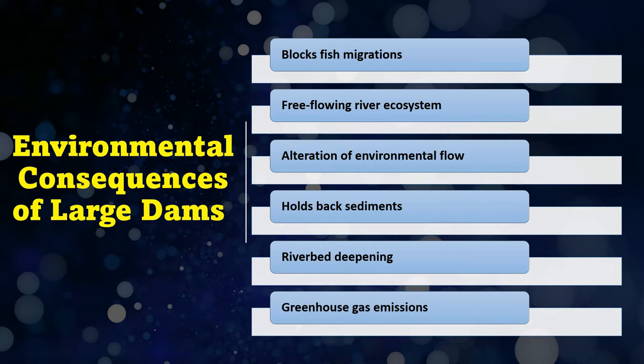Dams also trap sediments that are critical for maintaining physical processes and habitats downstream, including the maintenance of productive deltas, barrier islands, fertile floodplains, and coastal wetlands. Nowadays, fish ladders are constructed to help fish migrate to their spawning habitat. There has been much work done on this, but overall it still impacts fish population and habitat — it is a form of habitat fragmentation.